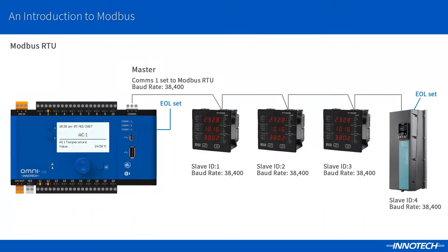In this example we can see that the Omni has the Modbus protocol activated and RTU is being used to connect the devices to the Omni RS-485. Note the addressing starts from 1 and is sequential up to the last device. Each device on this link will also need to be set to the same baud rate that the comms port is configured to.